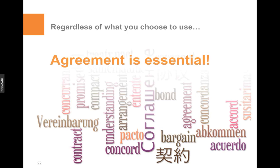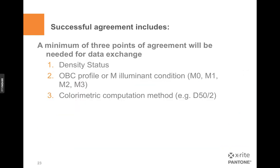The big takeaway here is agreement. No matter what, you need to agree on all of your measurement settings before starting to capture data. The bare minimum for agreement includes density status, either the use of an OBC profile or what M illuminant condition — M0, M1, M2, or M3 — you're using, and then lastly the colorimetric computation method. This is the settings you're using to convert the spectral data to LAB or XYZ. The illuminant condition or OBC profile is something that you can't change later even if you have the spectral data.